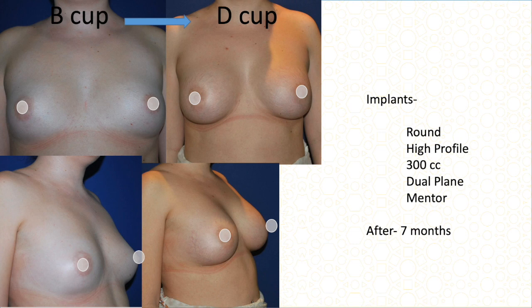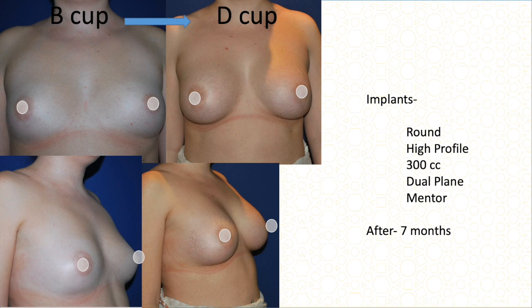Another B cup with a wider breast and nipples that are farther apart, but she has good elasticity and some fat. I used a 300 cc high-profile round implant — you will notice all the patients here have used round implants, which give good cleavage and upper pole fullness. This is seven months after surgery, and these results will last a very long time.